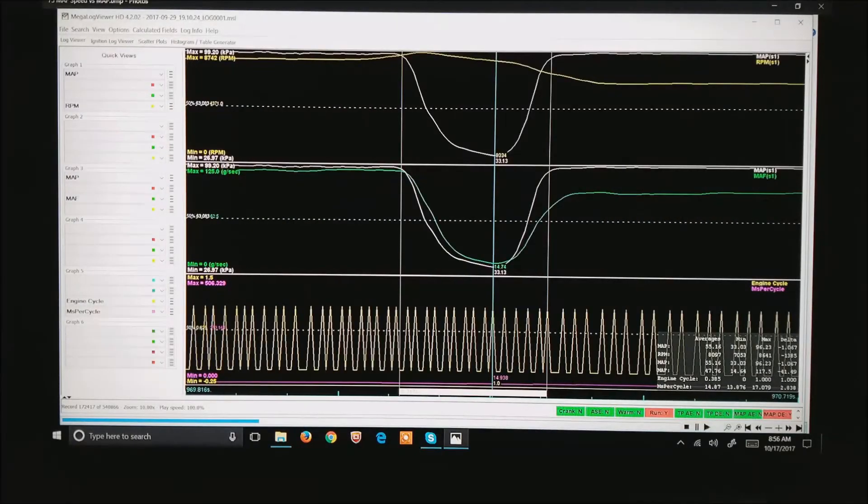In the next view, what I have is a car that is running a mass airflow. The entire shift took 14 engine cycles of the motor. But as the driver lifted out of the throttle, and unfortunately we don't have throttle position in this log, but you can see the map drop and in the next trace down in green is the mass airflow.